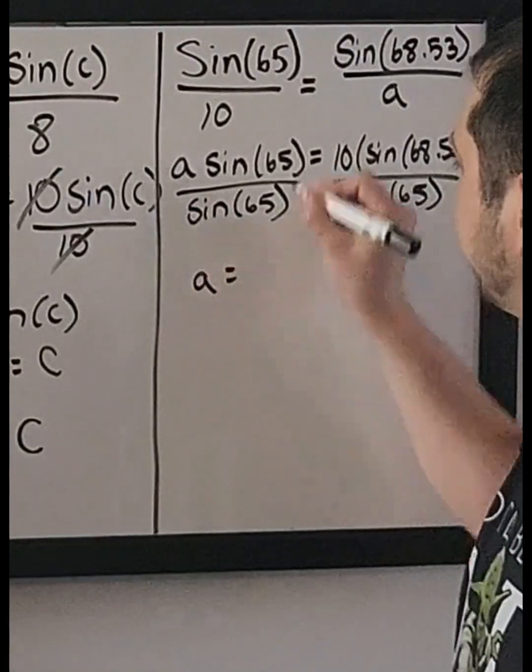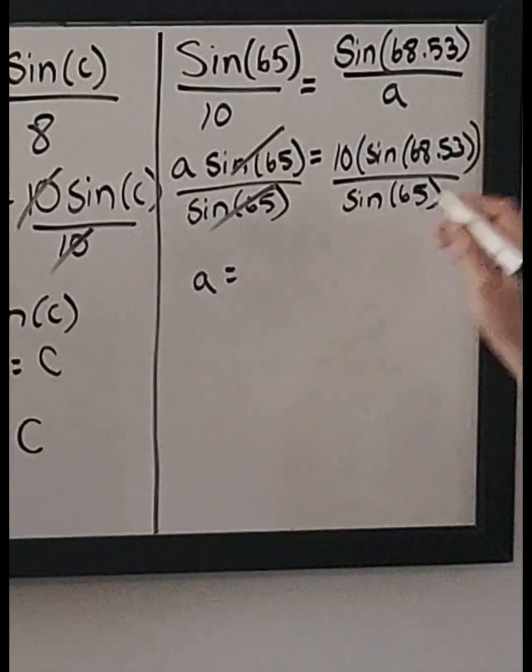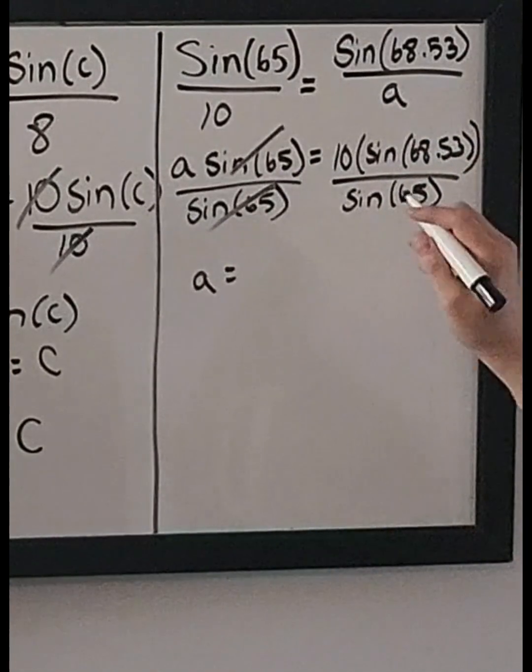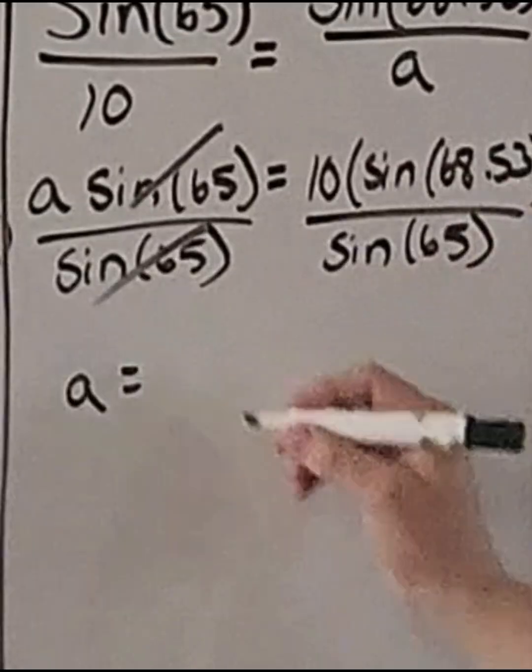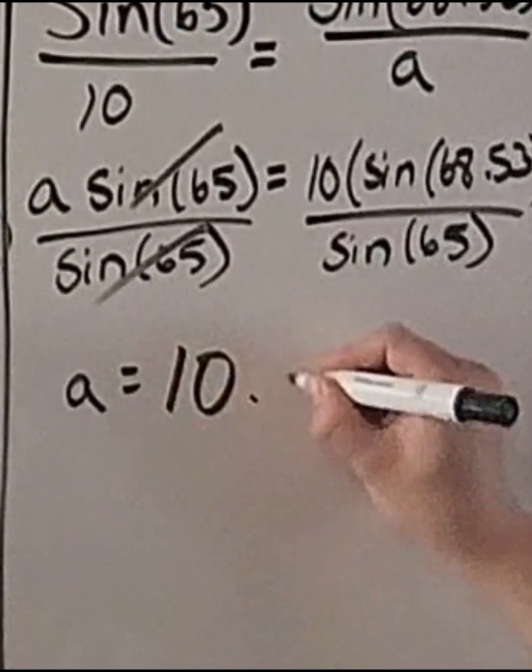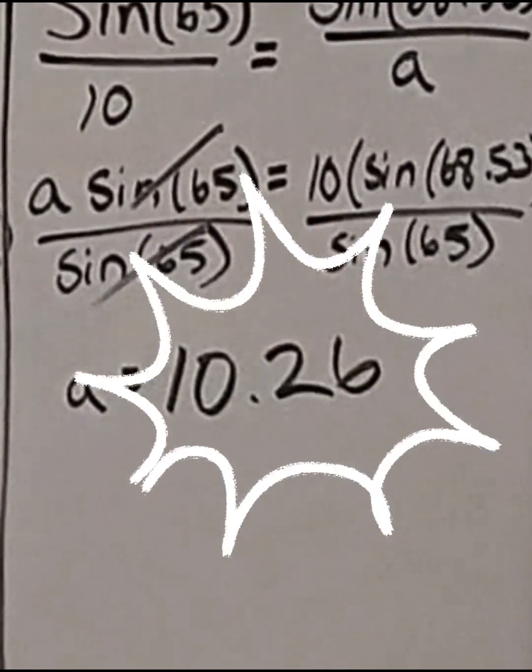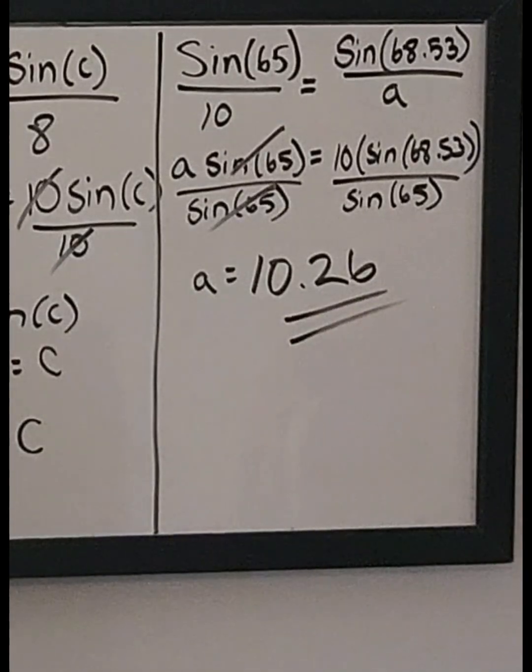So A, these will cancel, will equal 10 times the sine of 68.53 divided by the sine of 65. You plug that into your calculator, you will get 10.26, which is today's date, my birthday.